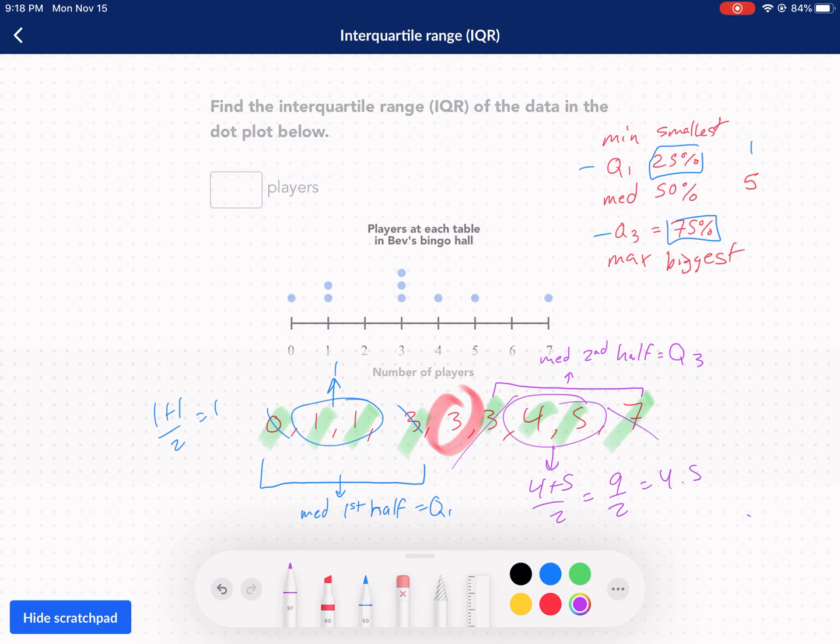If we were to draw this box plot out, here's zero. Our Q1 would be one. Our median would be three. One, two, three. Our Q3 would be 4.5. There's our Q3, 4.5. Then our maximum is seven. It would be something like that. Now,